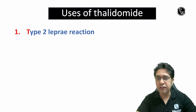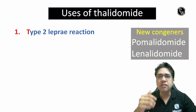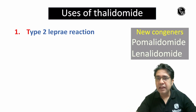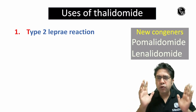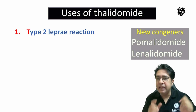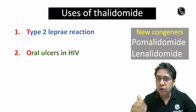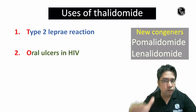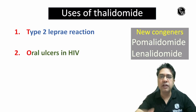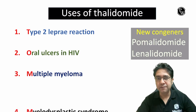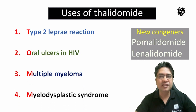We now have new congeners of Thalidomide, which also end with the word '-domide.' New drugs are pomalidomide and lenalidomide. Together, these three drugs — Thalidomide, pomalidomide, and lenalidomide — are used for the treatment of oral ulcers in HIV, and in cancers like multiple myeloma and myelodysplastic syndrome.